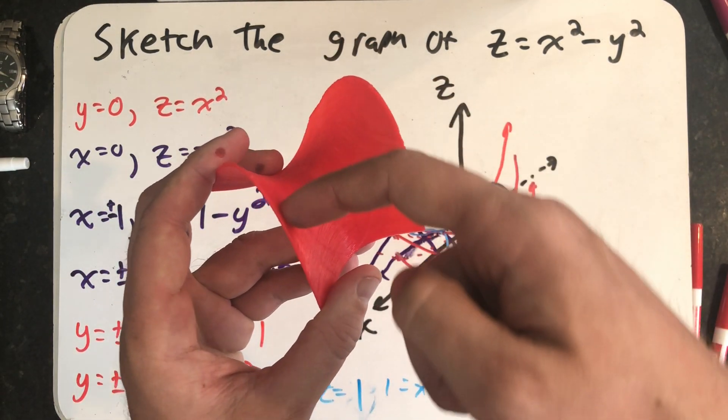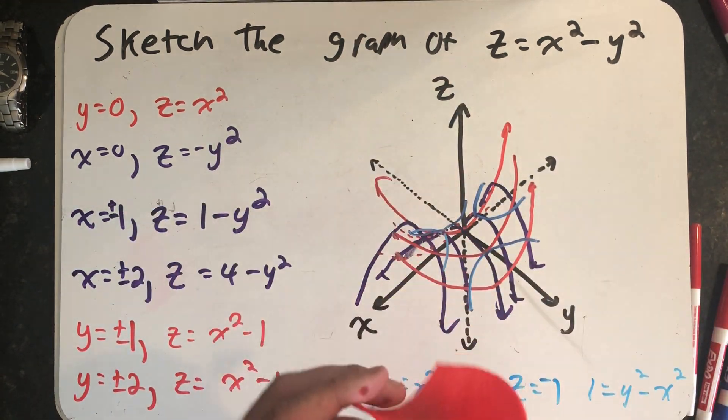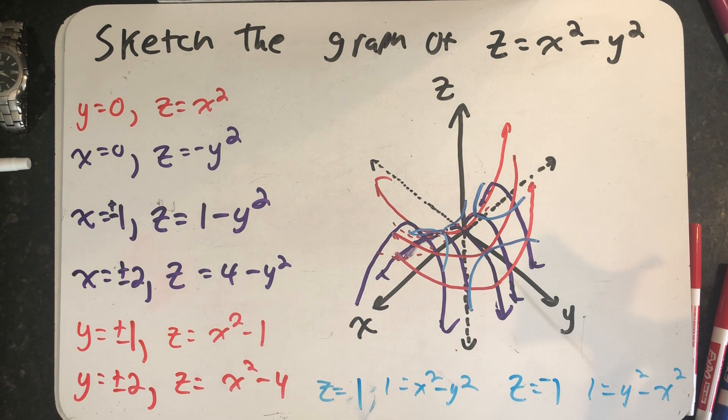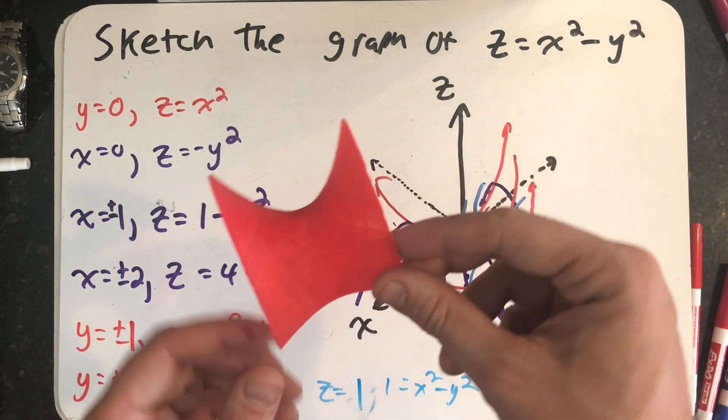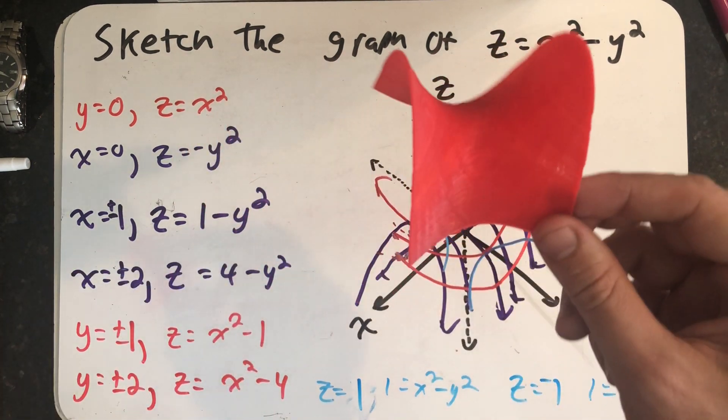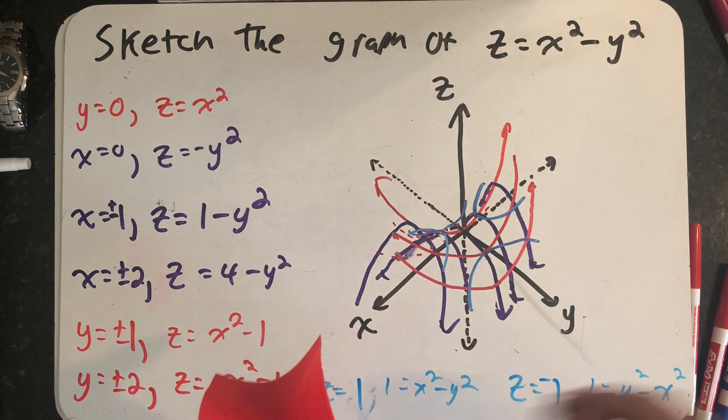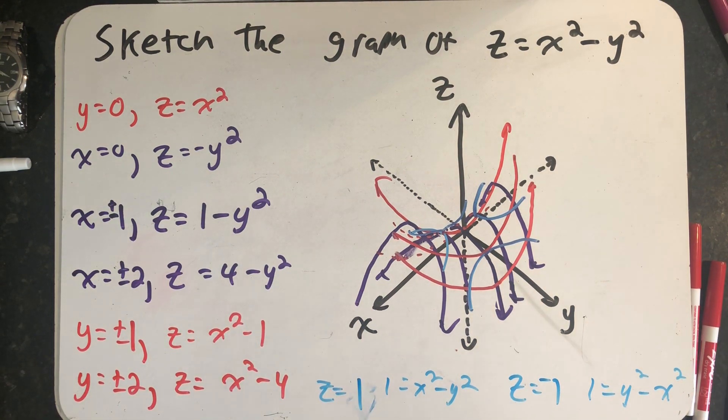If z was equal to two, I'd get a hyperbola here and here. Thus the name, the hyperbolic paraboloid. I like thinking about this as what we get when we look at a Pringles potato chip. There's one more slice I want to talk about though, at z equals zero.